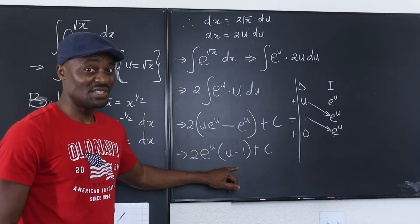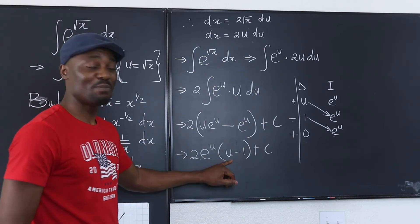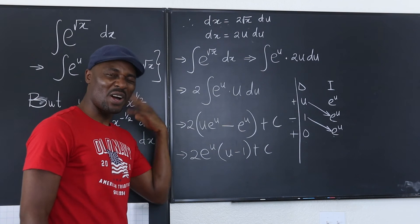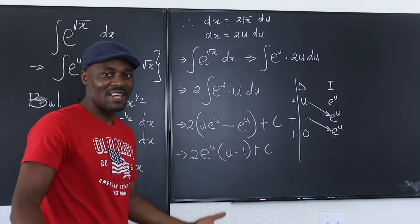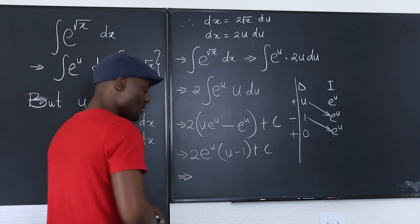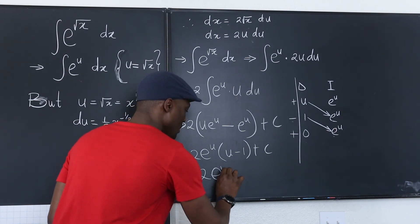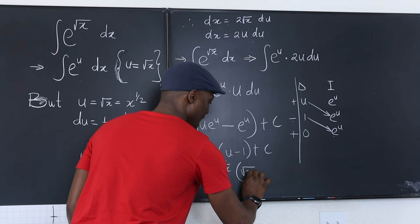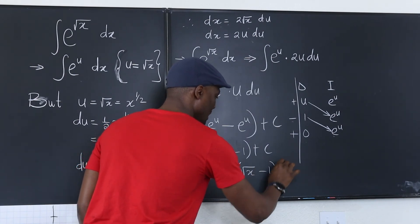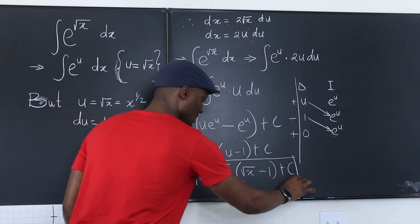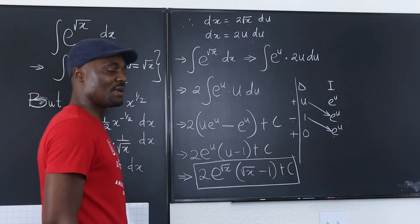But remember, the problem was not e to the u in the first, it was not u. The problem was in terms of x. So we just have to replace u with what u actually is. So finally, this is equal to 2 e to the square root of x multiplied by the square root of x minus one plus c. This is the answer you've been looking for.